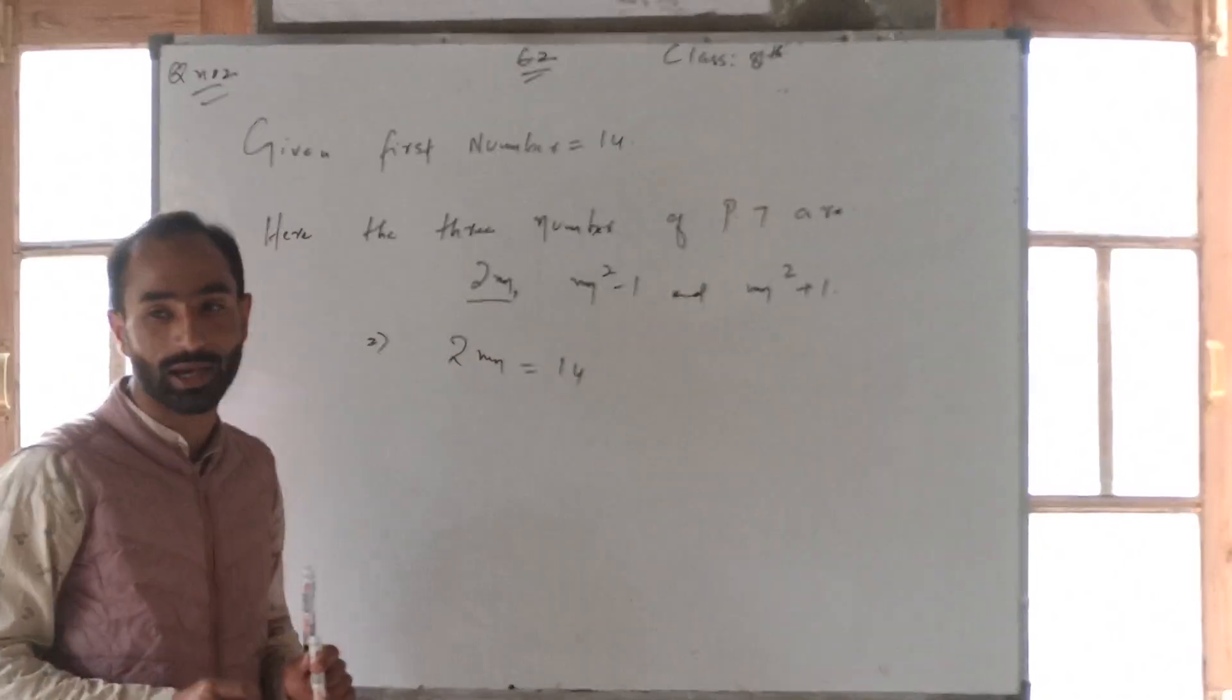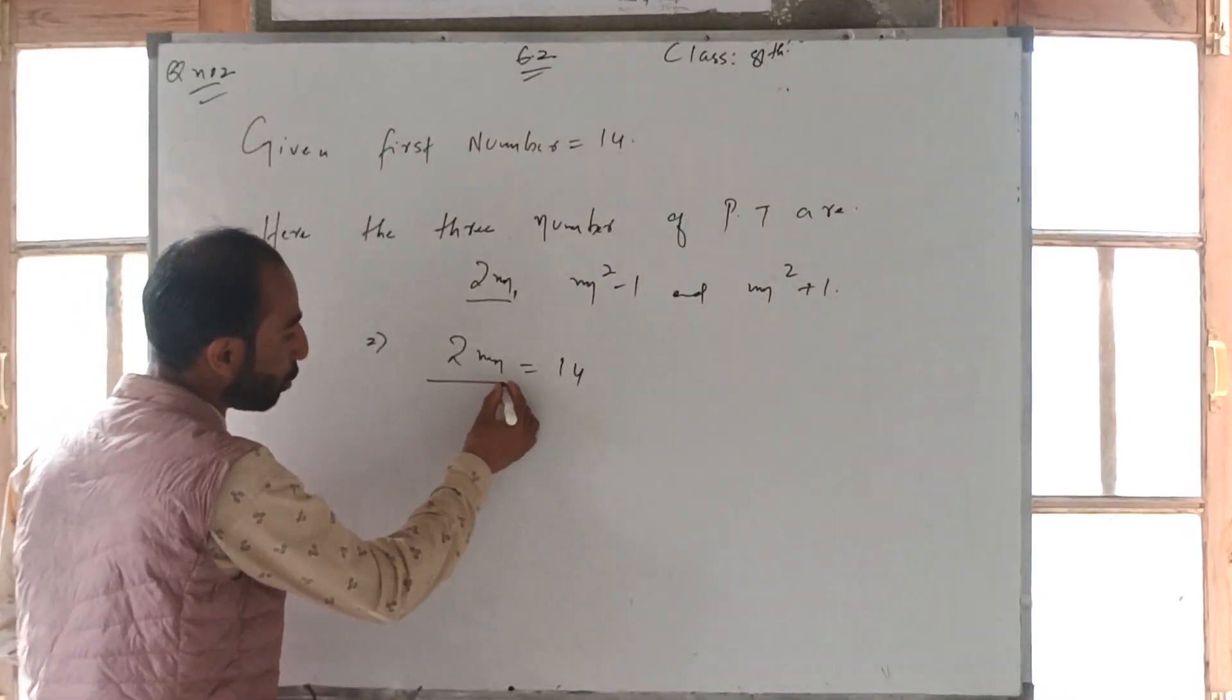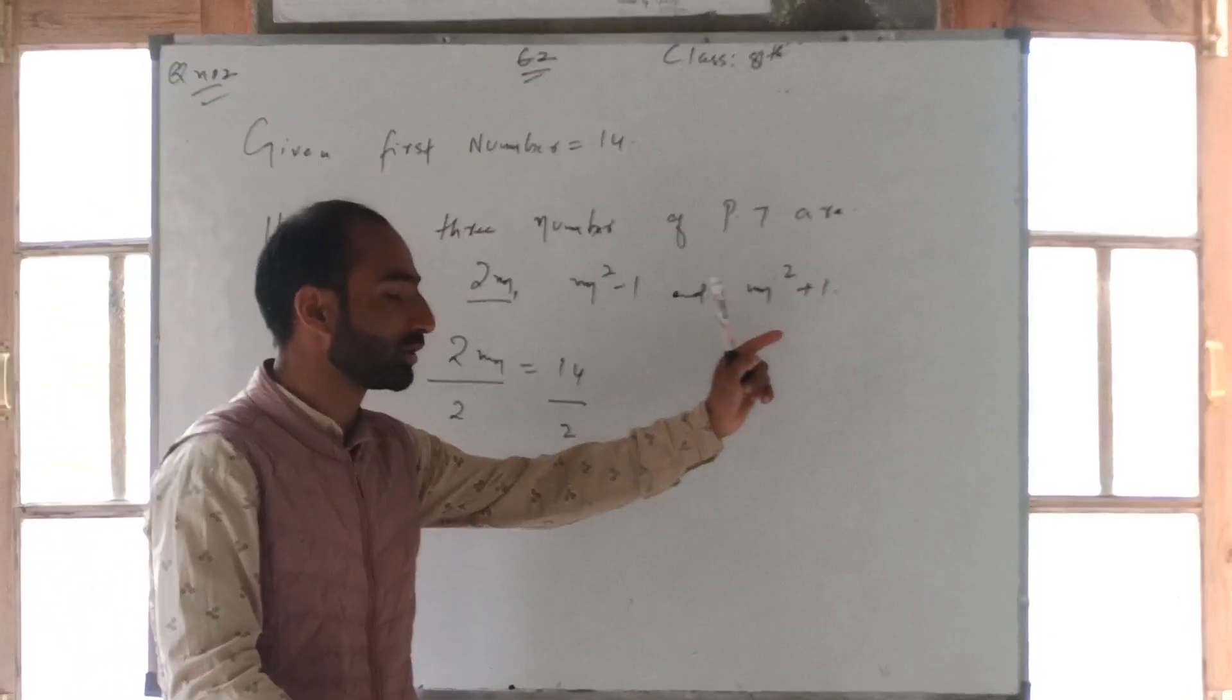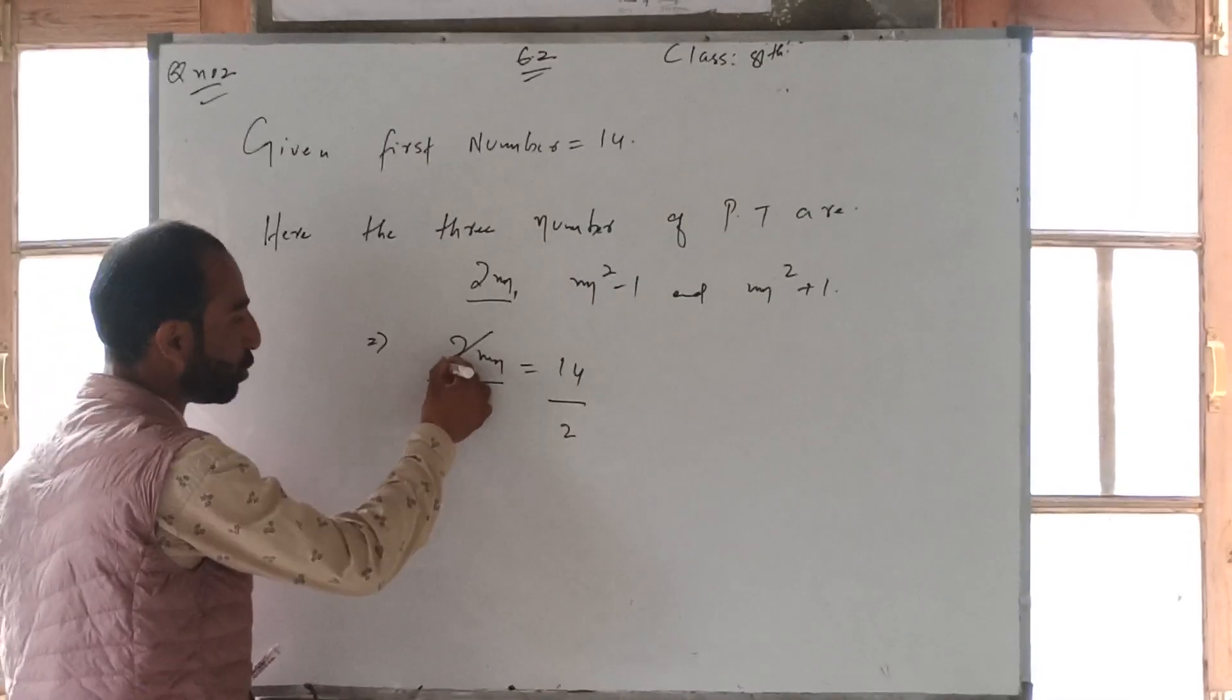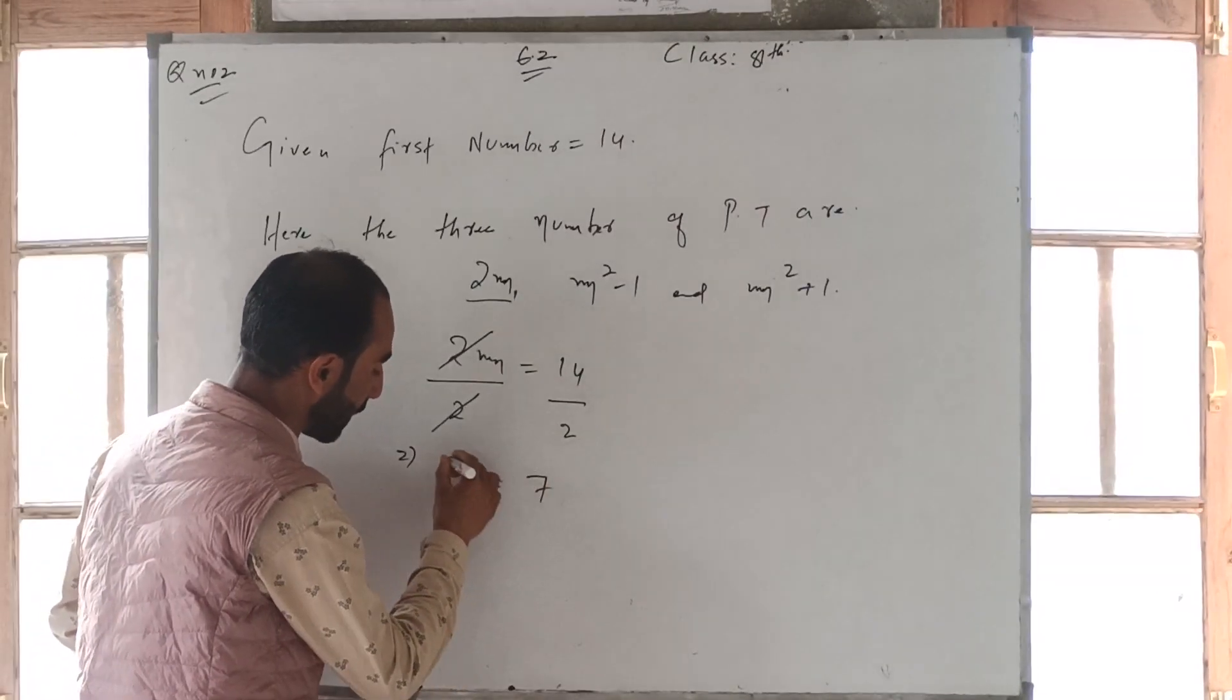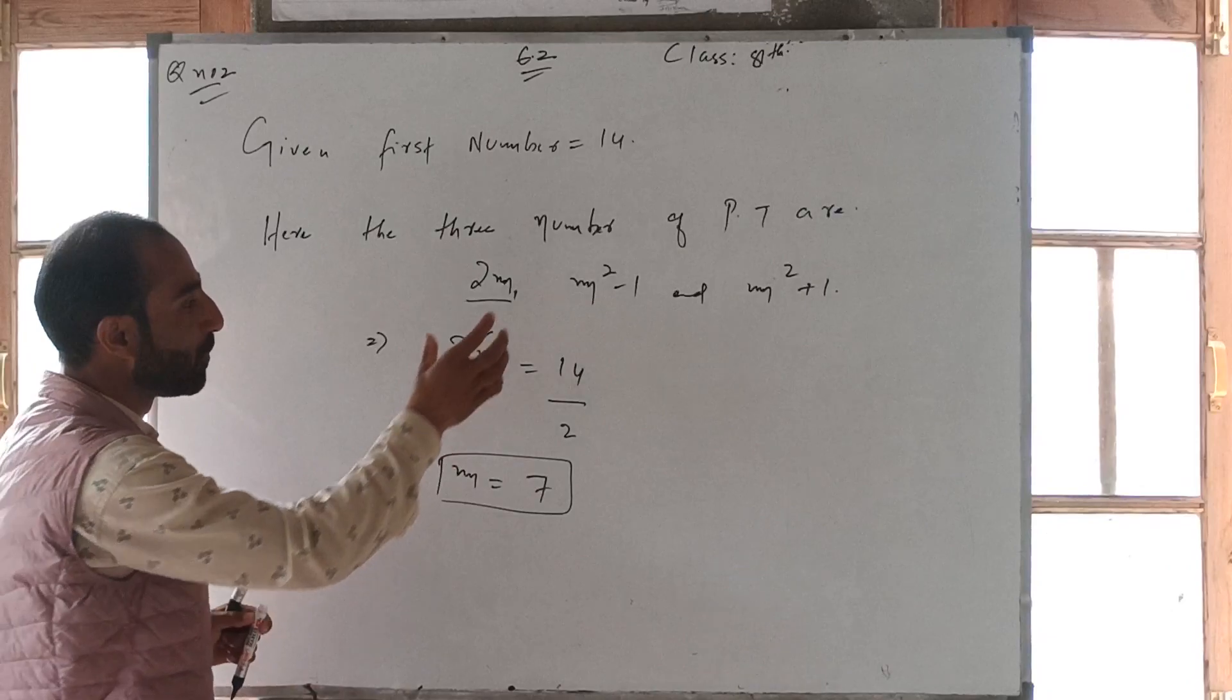Here we have to find the value. 2 is going to get cancelled. m is going to be 14 divided by 2, which equals 7. m equals 7.